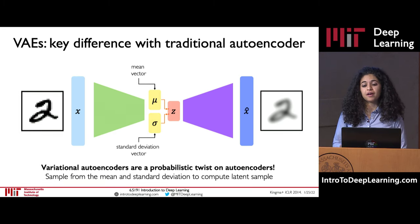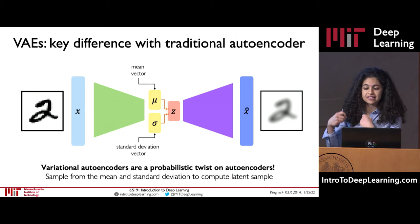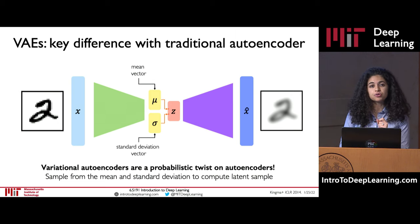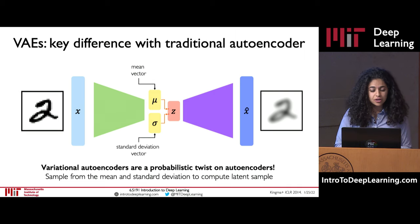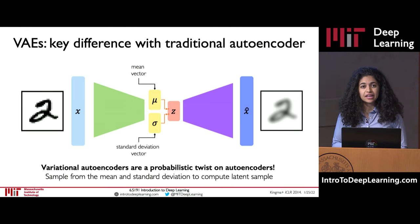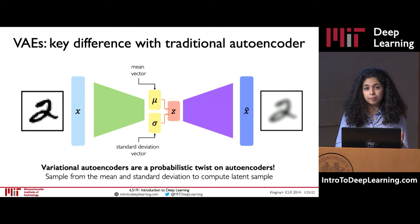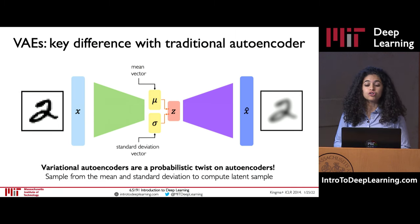Specifically, with VAEs we break down the latent space z into a mean and a standard deviation. The goal of the encoder is to output a mean vector and a standard deviation vector, which correspond to distributions of the latent variables z. By introducing this element of probability and randomness, we can now generate new data and build up a more meaningful and informative latent space. Each latent variable is defined by a mean and standard deviation, and we can sample from that latent distribution to generate new data examples.